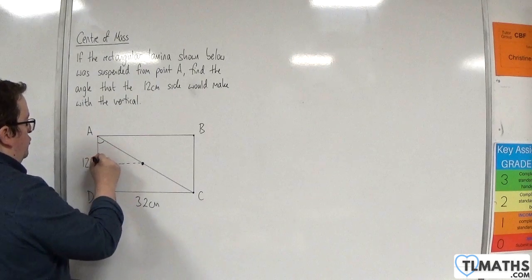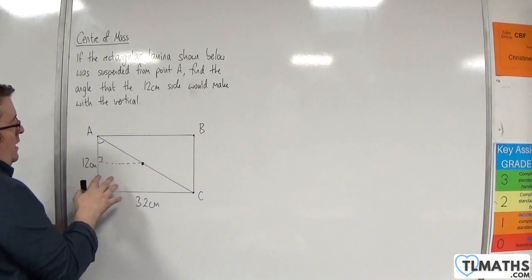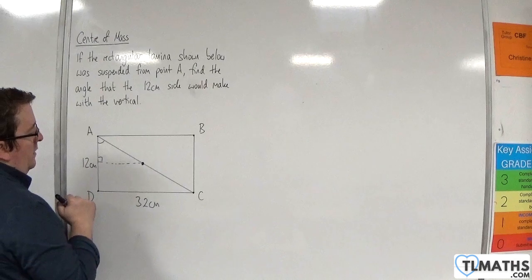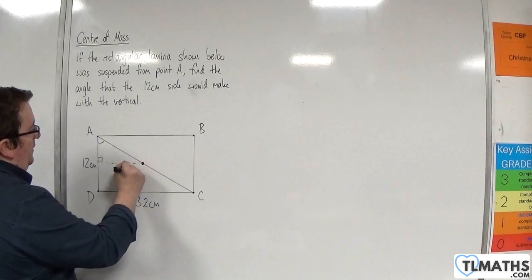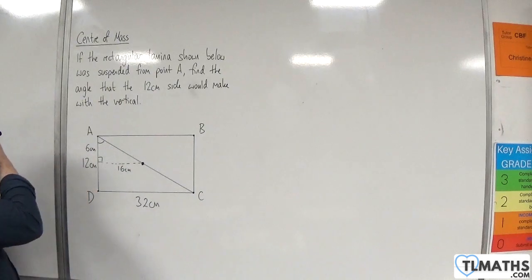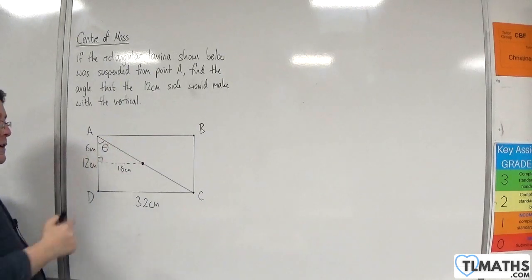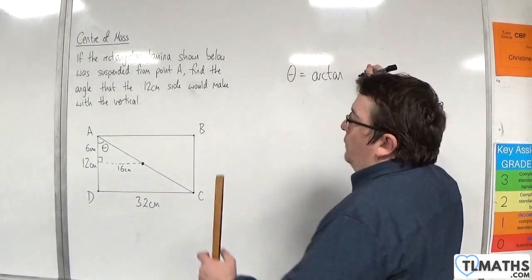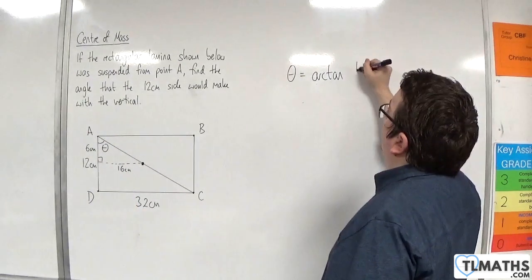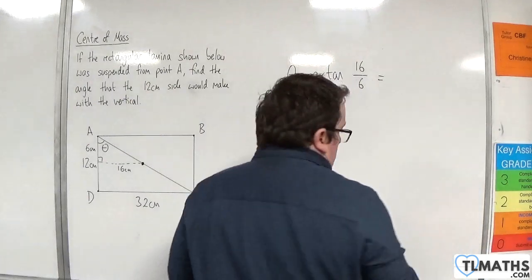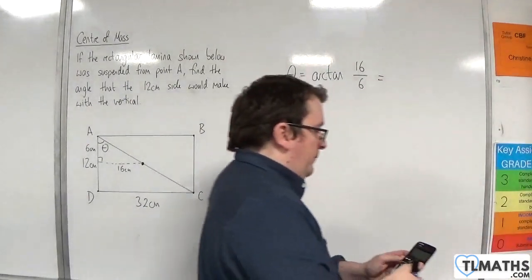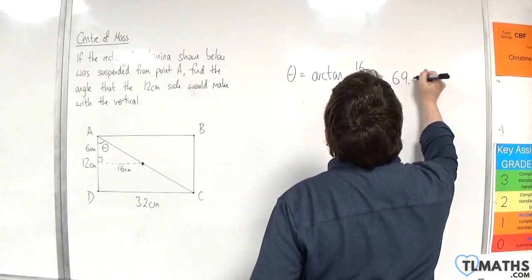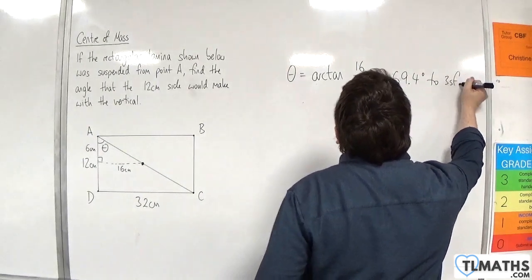So if I draw a right-angled triangle here — you could just do it as one big right-angled triangle, that's true. But just for the sake of having our centre of mass identified, I'll write that as 16 centimetres and that as 6 centimetres. So the angle I'm interested in is that angle there. Theta is going to be the inverse tan of the opposite over the adjacent, so 16 over 6. And so, inverse tan of 16 over 6 is 69.4 degrees to 3 significant figures.